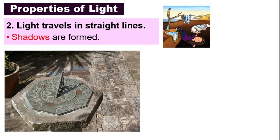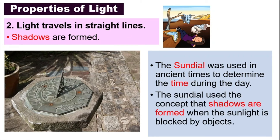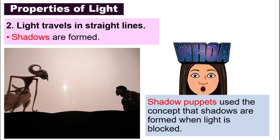Because light travels in straight lines and because of the formation of shadows, people from long ago determined the time during the day by using a sundial — it is like a clock from ancient times. They used the concept that shadows are formed when sunlight is blocked, so they could tell the time by looking at the sundial. You can also see shadow puppets, a fun little show that uses the concept of shadows as well.